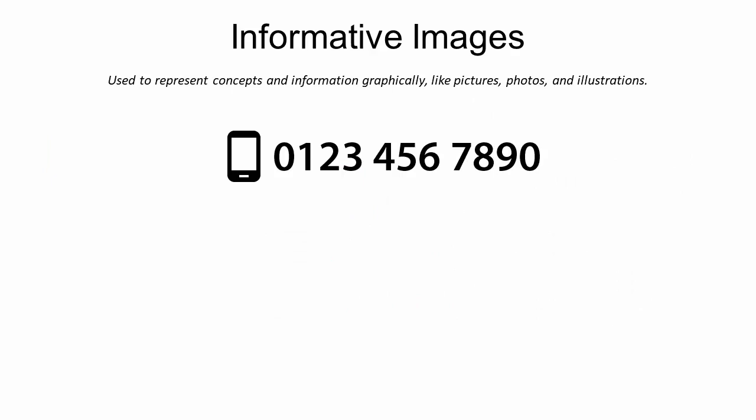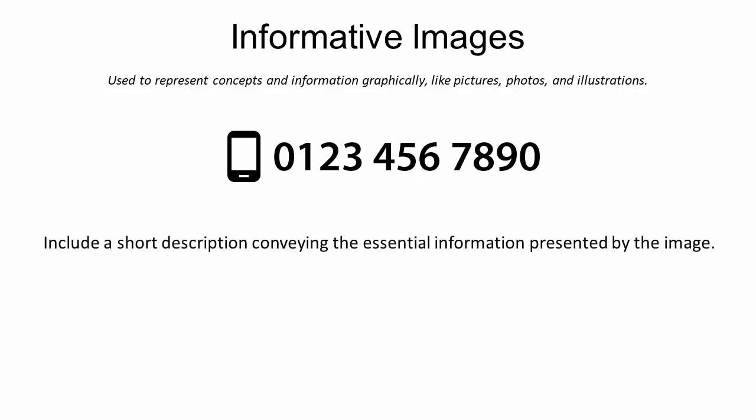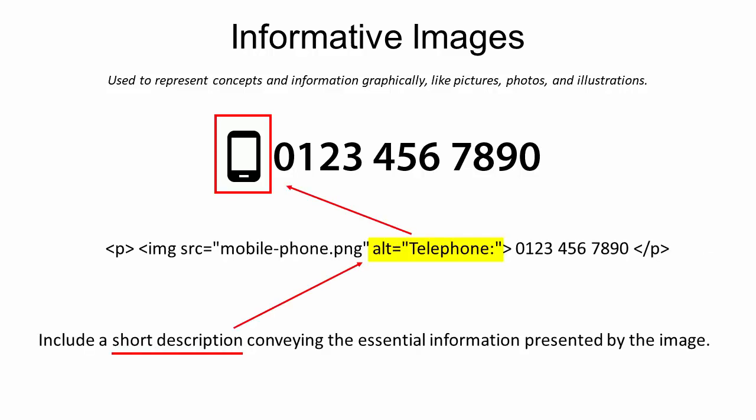Informative images are used to represent concepts and information graphically, like pictures, photos, and illustrations. With informative images, you should include at least a short description conveying the essential information presented by the image. So, in this phone number example, the phone icon is an informative image, and the short description we would add as alternative text here would be something like 'telephone.'